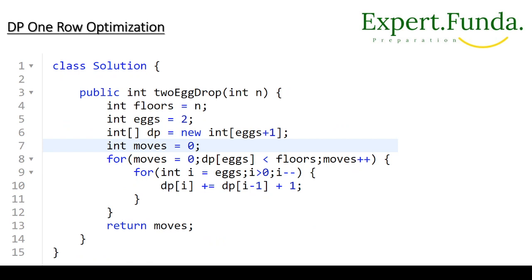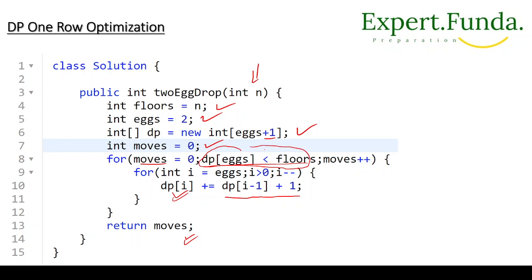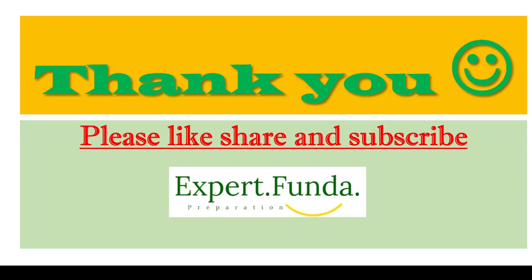To reduce the code further, use a single DP array of size egg+1. Track previous moves starting from 0, loop through all eggs, and continue while the dp value is less than or equal to floors. In a for loop, store updated values as dp[j] = dp[j] + dp[j-1] + 1, then update dp and return the move count when dp[egg] is greater than or equal to floor. Thank you for watching this video.